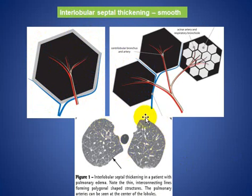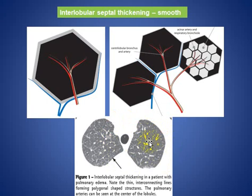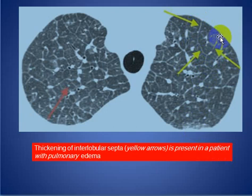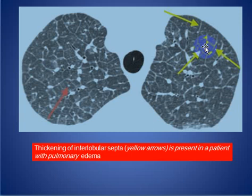Here we see some thickening of the interlobular septum of the secondary pulmonary lobule. The dot represents the central arteriole, and the lucent area represents the central terminal bronchiole.